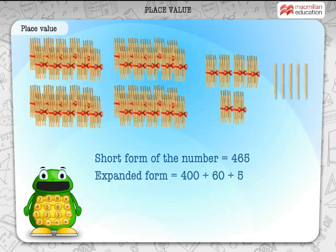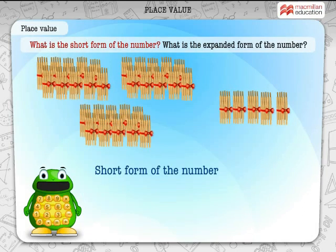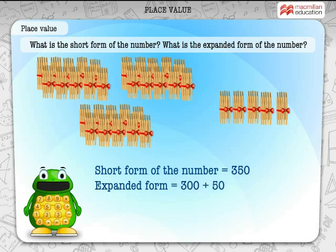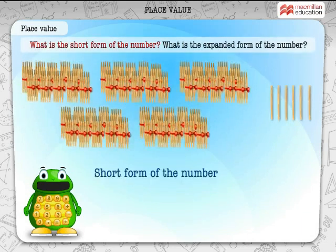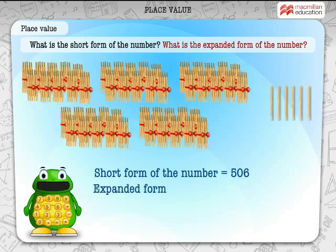You are right. What is the short form of the number? 350. What is the expanded form of the number? The expanded form of 350 is 300 plus 50. Absolutely. What is the short form of this number? 506 is the right answer. What is the expanded form of the number shown? The expanded form of 506 is 500 plus 6.